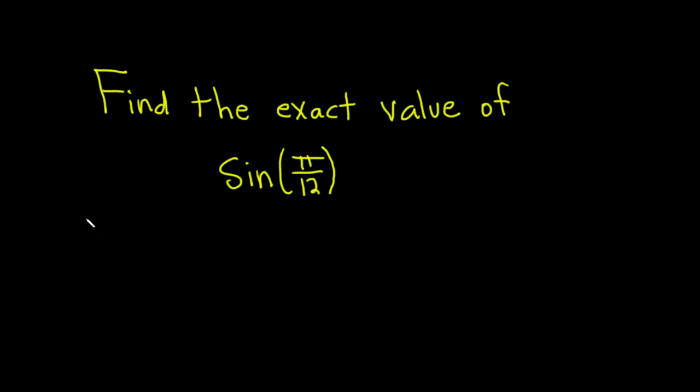we're going to write pi over 12 as a difference of two angles that we're more familiar with. In particular, if you have pi over 12, you can write it as 4 pi over 12 minus 3 pi over 12.